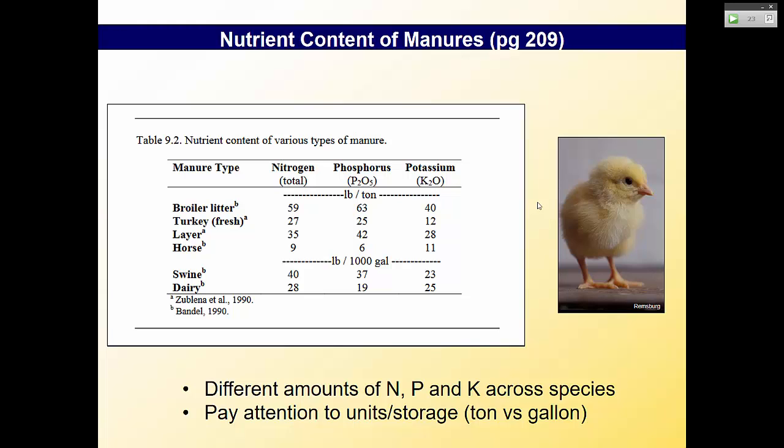Pay attention to units. Pounds per ton means it's dry weight. Pounds per 1,000 gallons means it's in liquid storage. Those units are critical when doing calculations — pounds of P₂O₅ per ton versus pounds of P₂O₅ per 1,000 gallons. On the exam they'll give you the values; you won't have to guess the nitrogen content of a specific manure.